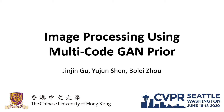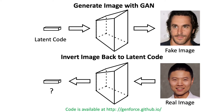We present our work, Image Processing Using Multicode GAN Prior. Advanced GAN models are able to generate realistic images, and reusing these models as prior could lead to wider applications. Inverting an image to a latent code enables us to reconstruct it using the GAN model, and can serve as a powerful prior for post-processing.